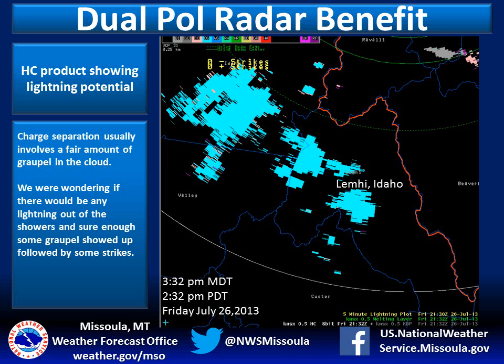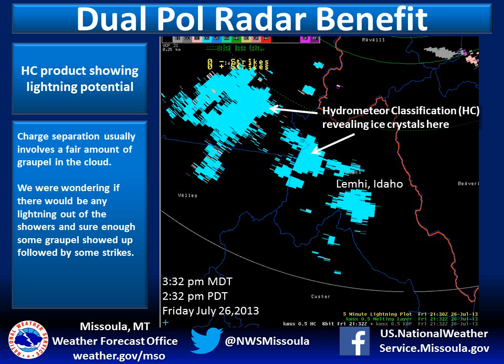The hydrometeor classification, or HC for short, is a dual pole product that helps us to differentiate between objects that the radar sees. The light blue here reveals ice crystals. What we're going to be looking for here is the potential for lightning in these showers. You need a fair amount of graupel in a cloud for charge separation and therefore lightning to occur. Now this is over a hundred miles from the radar, which is pretty far away, but we're still able to find usefulness for this product.